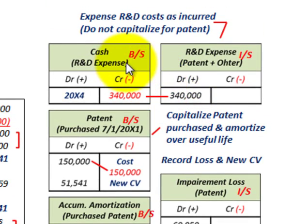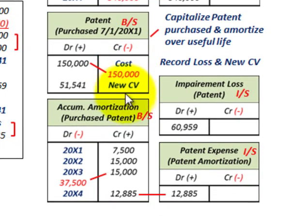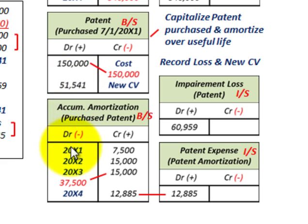Remember: expense R&D costs as they're incurred, even if used against your patent — they're not capitalized. To record an impairment loss, remove the original cost and accumulated amortization off your books, recognize the loss, and then recapitalize at the new fair value — in this case, the present value of future cash flows. That takes care of our patent amortization and impairment loss on this purchased patent.